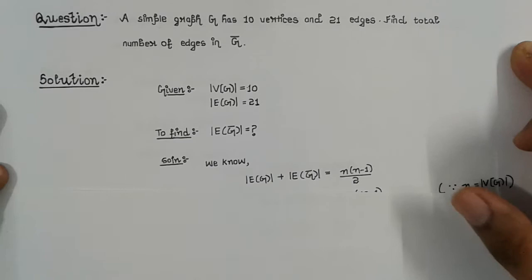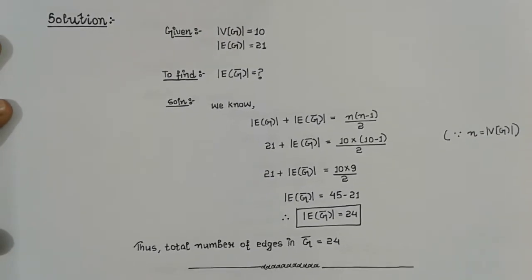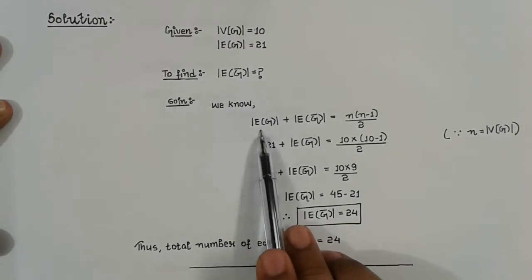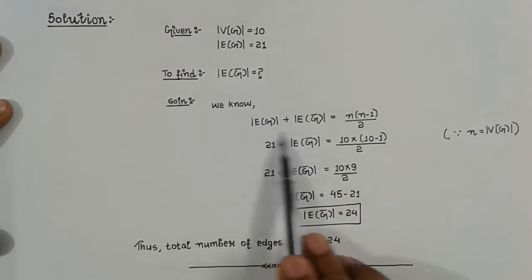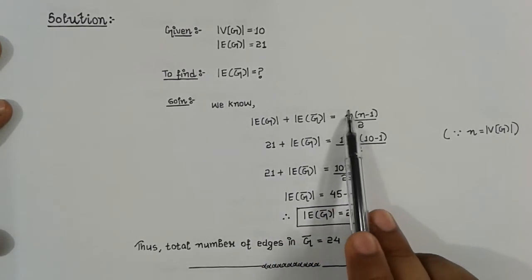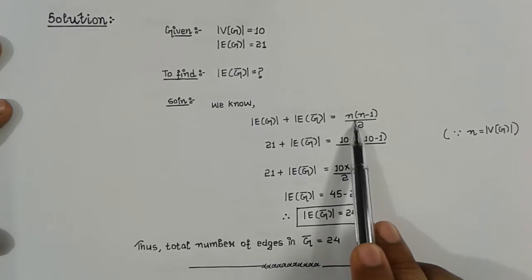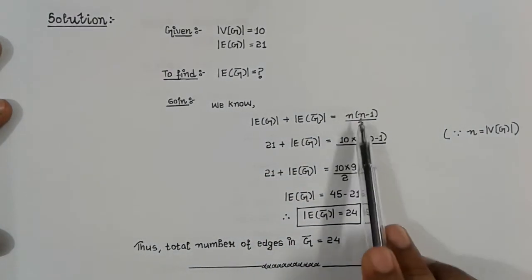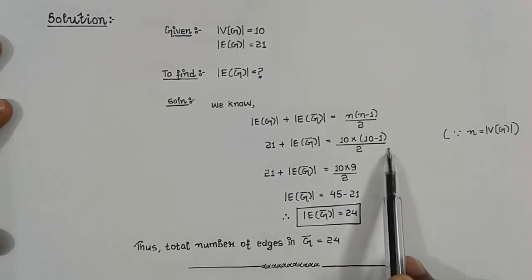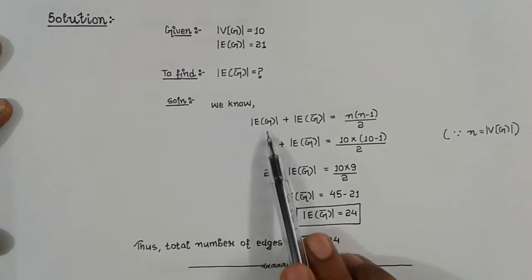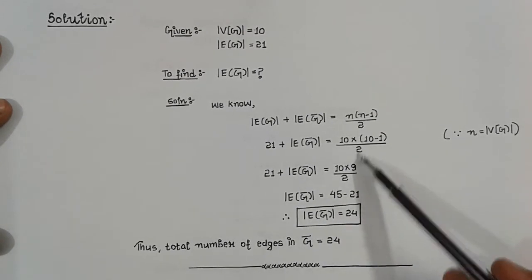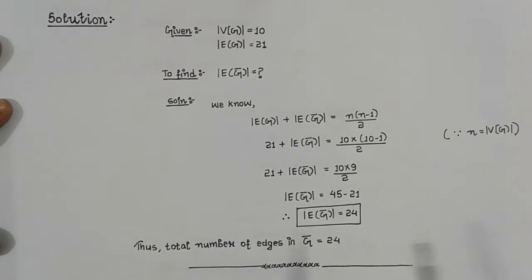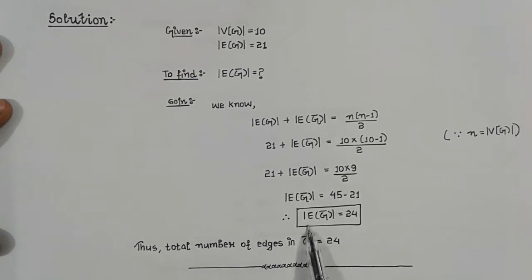We will use the relation: number of edges in G plus number of edges in G-bar equals N(N-1)/2. We know the value of N is 10, since that is the number of vertices in graph G. We substitute N equals 10 to get the total number of edges in the complete graph, and then subtract the 21 edges of G. The answer is 24. So the total number of edges present in G-bar is 24.